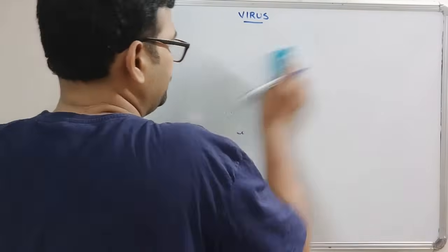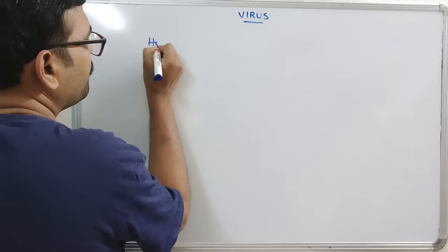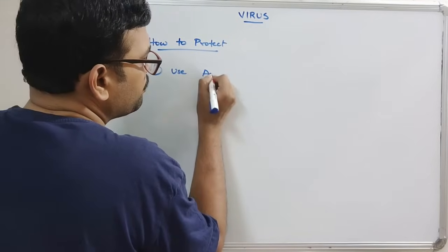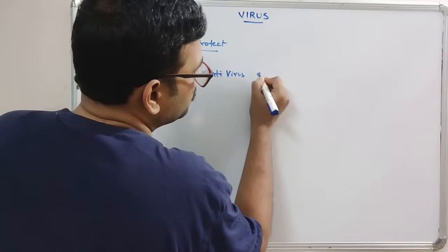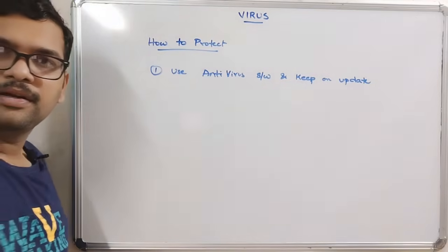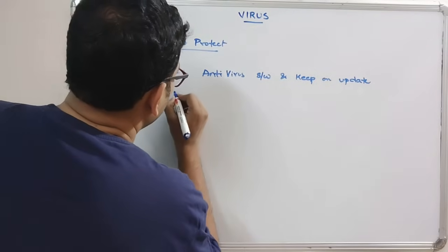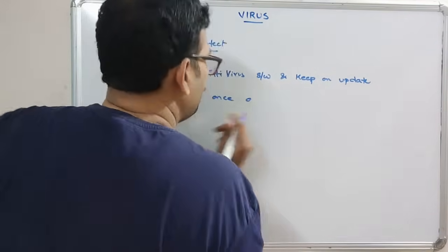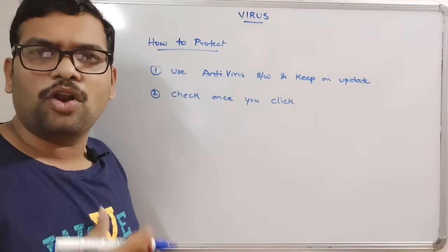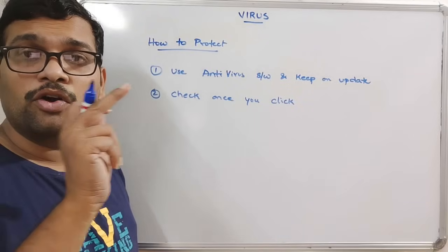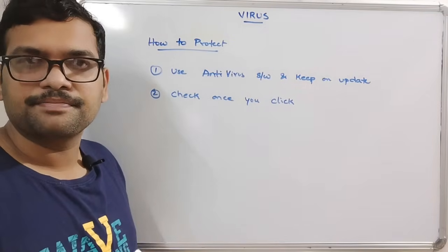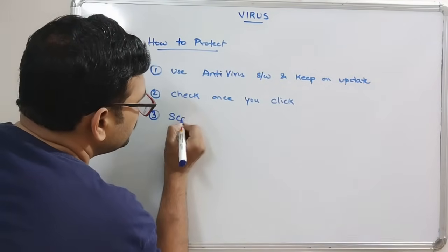Now, how to protect our computer from viruses? First, use an antivirus program and keep it updated. Second, check before you click — in your email you will receive a lot of emails with different links. Before clicking on any link, check whether it is valid or invalid. Don't follow unwanted links.